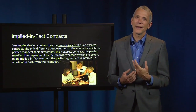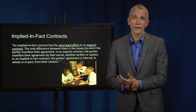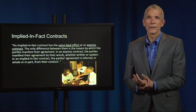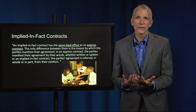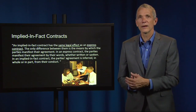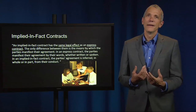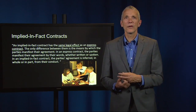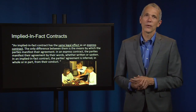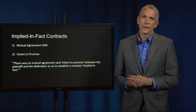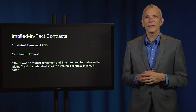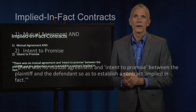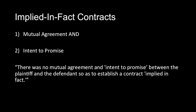An implied-in-fact contract has the same legal effect as an express contract. Express contracts are the contracts we've been studying in other cases. The main difference is that people use words in an express contract, while in an implied-in-fact contract, people manifest their mutual assent by their actions and their words. For an implied-in-fact contract to exist, two conditions must be satisfied: there must be mutual agreement, and there must be an intent to promise. In this case, the court found these elements to be lacking and held there was no implied-in-fact contract.